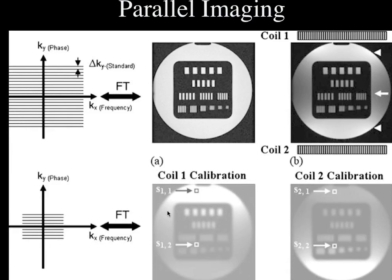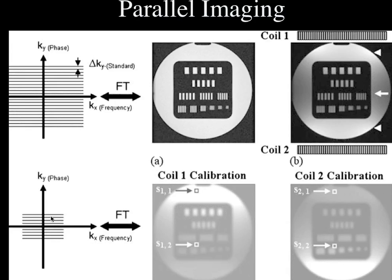If we acquire an image with one coil, we get a very characteristic distribution of signal — brighter next to the coil, darker away from it — same with the other coil. It turns out we can use this to give us spatial information so that maybe we can take less time acquiring data and get added information about spatial orientation from the coils themselves. If you have a nice image from completely filling k-space, and instead you only acquire the center of k-space —